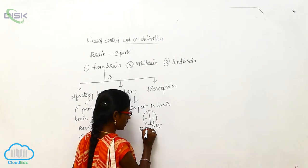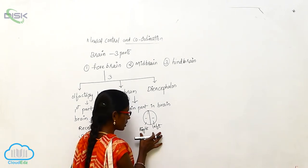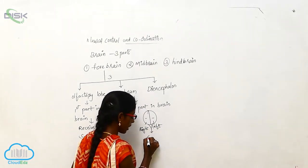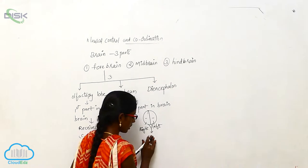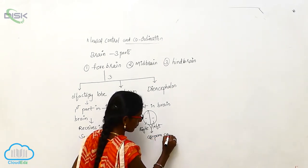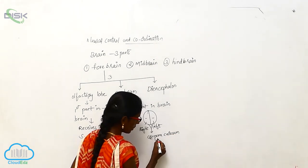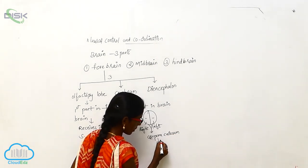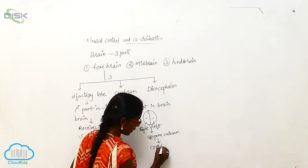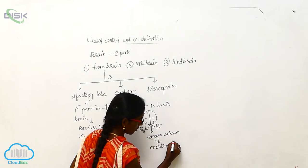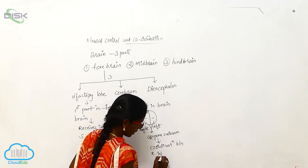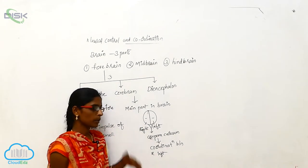The left and right cerebrum are interconnected by the corpus callosum. The corpus callosum brings coordination between the right and left cerebrum.